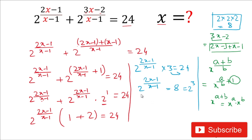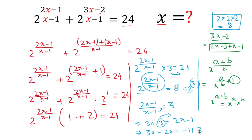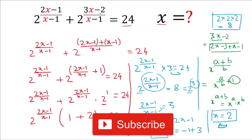Since the base is the same (base 2 on both sides), the powers must be equal. So (2x-1)/(x-1) = 3. Cross multiplying gives 3x - 3 = 2x - 1. Simplifying: 3x - 2x = -1 + 3, so x = 2. The value of x is 2, and that is our answer.